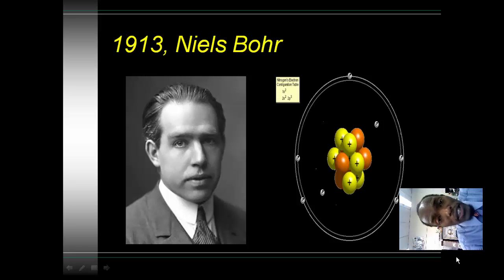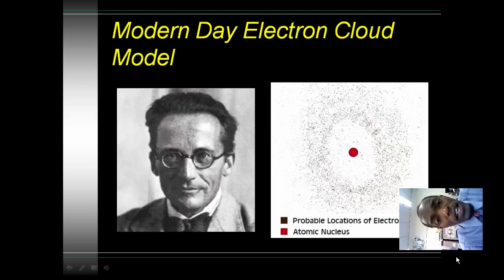Now we accepted that theory for a very long time, but then in modern day, we have Erwin Schrödinger, along with a few others, Heisenberg and Einstein. They came up with this electron cloud model, still agreeing with Bohr that there were two subatomic particles in the nucleus, protons and neutrons, and agreeing with Rutherford that electrons orbit the nucleus. But they said that it wasn't in fixed paths, but more like in a cloud. These electrons orbit the nucleus in a cloud-like formation. In this picture that you see here, it shows the probable locations of electrons, not knowing where they might be at, but probable locations of electrons. And it shows the atomic nucleus.